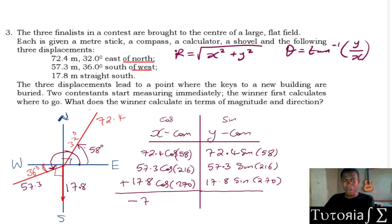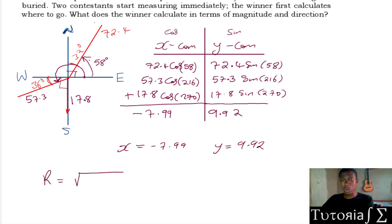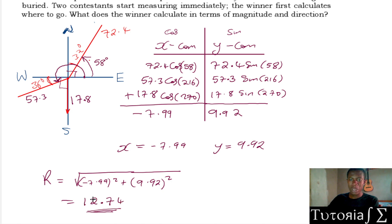When we compute all the x-components — 72.4 cos(58°) plus 57.3 cos(216°) plus 17.8 cos(270°) — we get negative 7.99. When we compute all the y-components — 72.4 sin(58°) plus 57.3 sin(216°) plus 17.8 sin(270°) — we get 9.92. So our x-component is −7.99 and our y-component is 9.92. Using the resultant formula: R equals the square root of (−7.99)² plus (9.92)², which gives a resultant of 4.74.